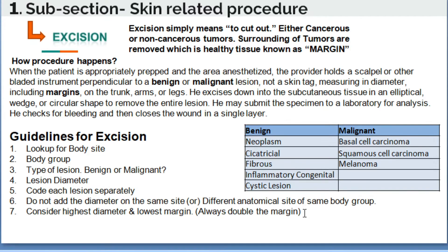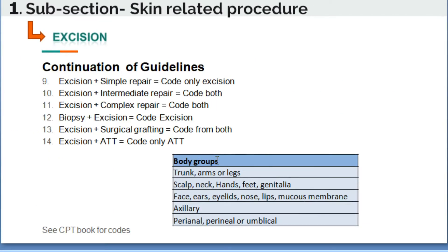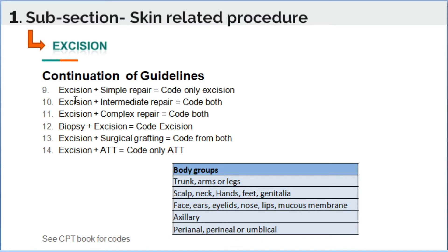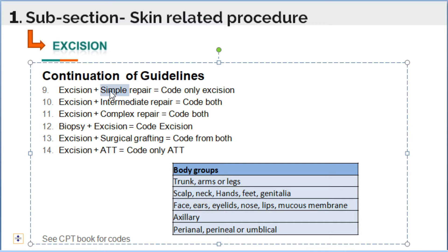For excision plus simple repair, code only the excision — no need to separately code the simple repair. If excision plus intermediate repair is documented, you must look for two codes: intermediate repair and excision. Similarly, if excision plus complex repair is documented, code both.